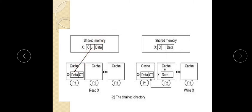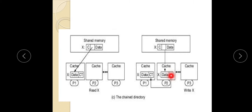In the first case, read x is initiated by cache 1. In the second case, read x is initiated by cache 2. Cache 2 gets the data block and a pointer. Cache 2 maintains a directory with a next pointer linking to the next cache in the chain — forming the chained connection.